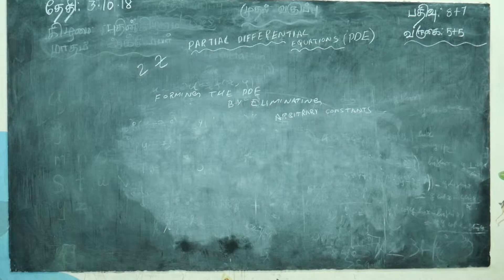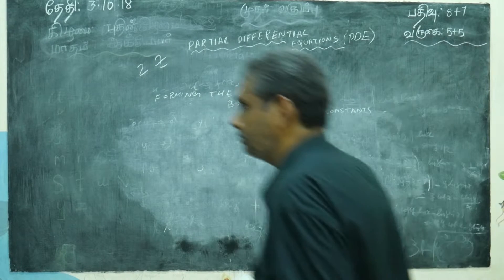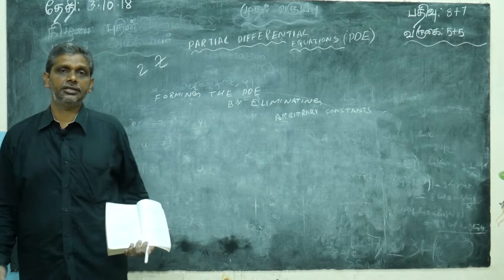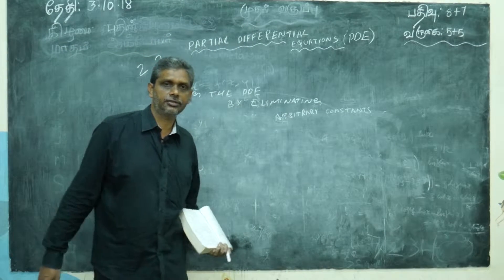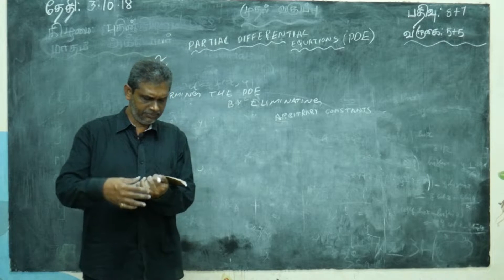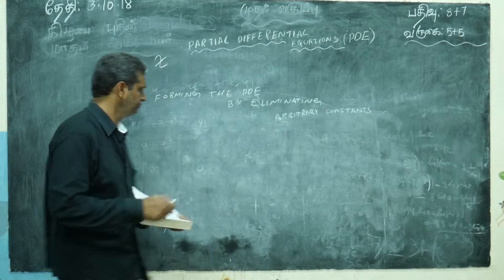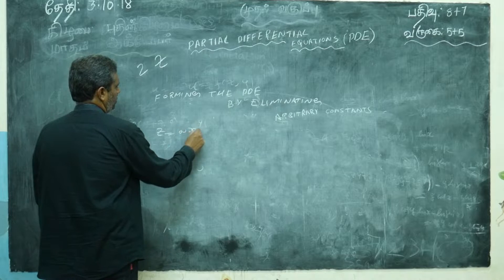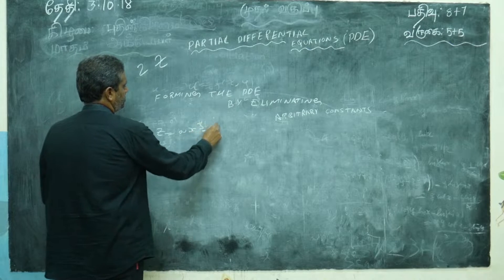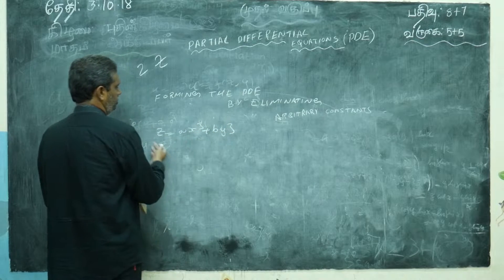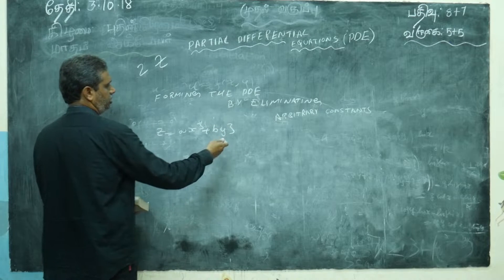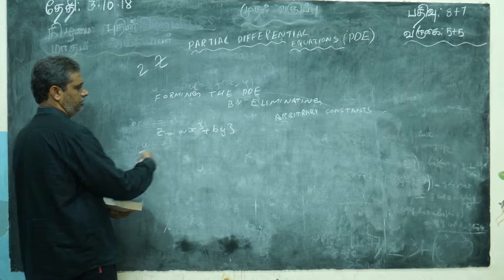In previous classes we attacked the problem of how to eliminate arbitrary functions and arbitrary constants. Now a few exercise problems — try yourself. First: z = ax² + by². What you will do: p is equal to 2ax, q is equal to 2by. Take and remove, and you will get the answer.